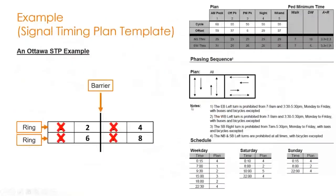This is how you receive a signal timing plan from the City of Ottawa. The city shows which phases run together — for example, northbound through, southbound through, and pedestrian phases running together. Notes indicate that the eastbound left is prohibited during peak AM and peak PM Monday to Friday, so you don't include it in your peak hour analyses. The same prohibition applies for the westbound left and southbound right turn. Northbound and southbound left turns in the north-south direction do not have their own phase — they operate with the same north-south phase.